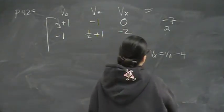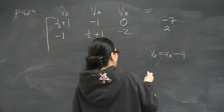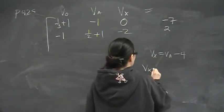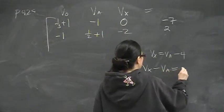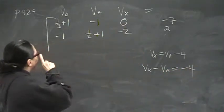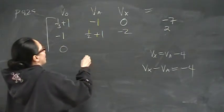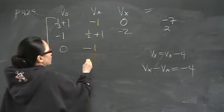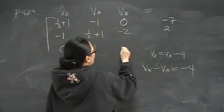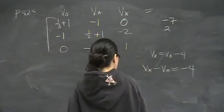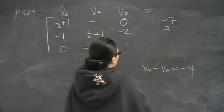And then this one I'm going to rewrite with all the variables on one side, so it's going to be Vx minus Va equals negative 4. So I have zero occurrences of Vout, I have negative 1 coefficient for Va, and positive 1 for Vx, and negative 4 for constants.